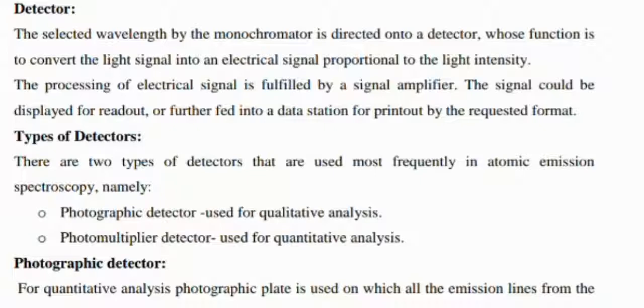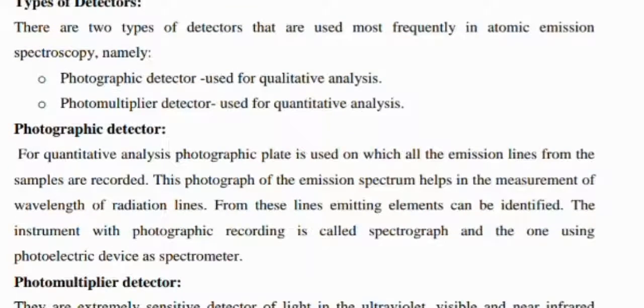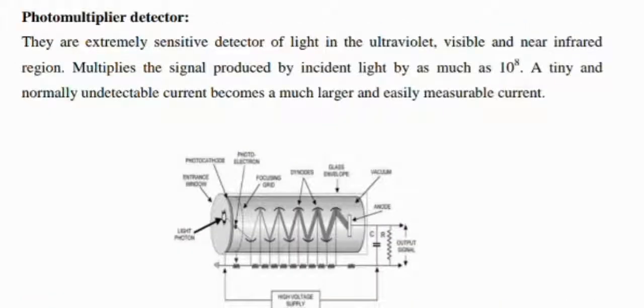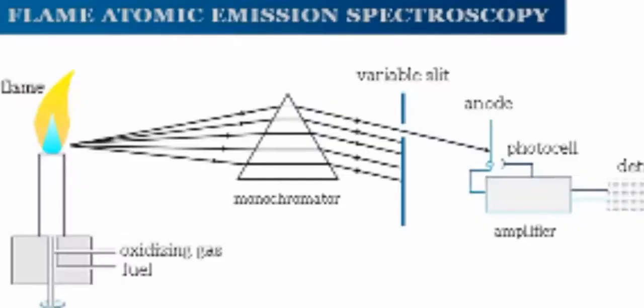It includes two types: the photographic detector for qualitative analysis, and the photomultiplier detectors for quantitative analysis. For the photographic detector, a photographic plate is used on which all the emission lines from the samples are recorded. Photomultiplier detectors are extremely sensitive detectors of light in the ultraviolet, visible, and near-infrared region with amplification of 10^8 incident light.